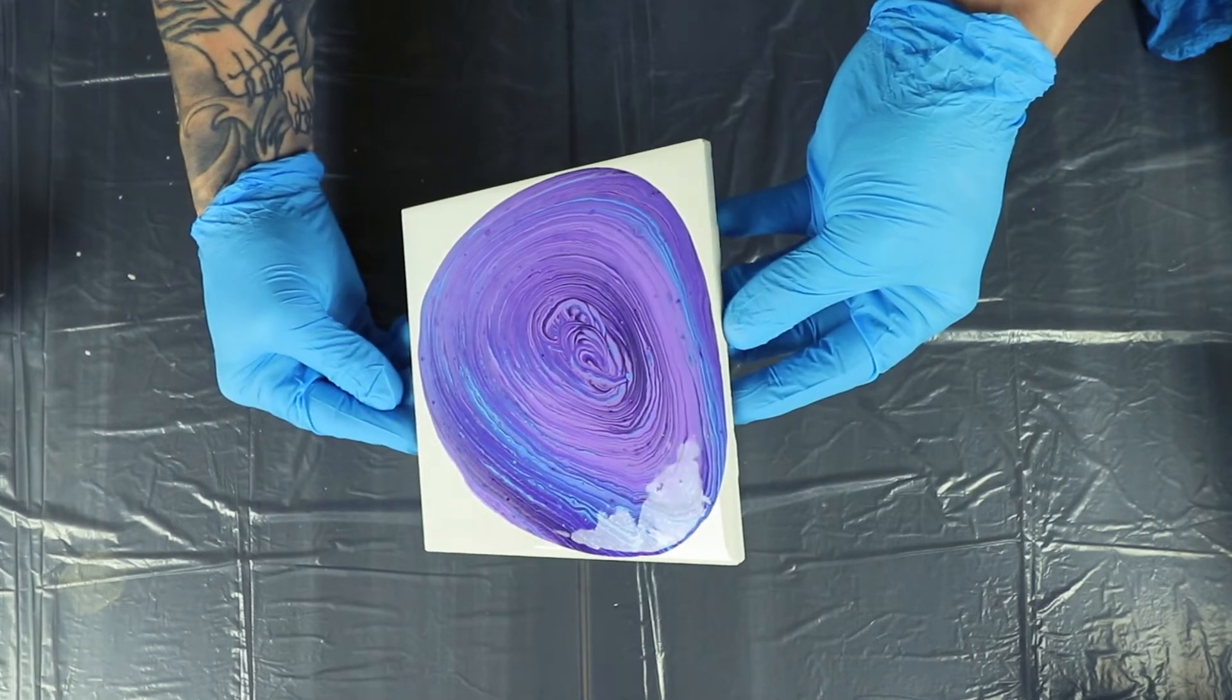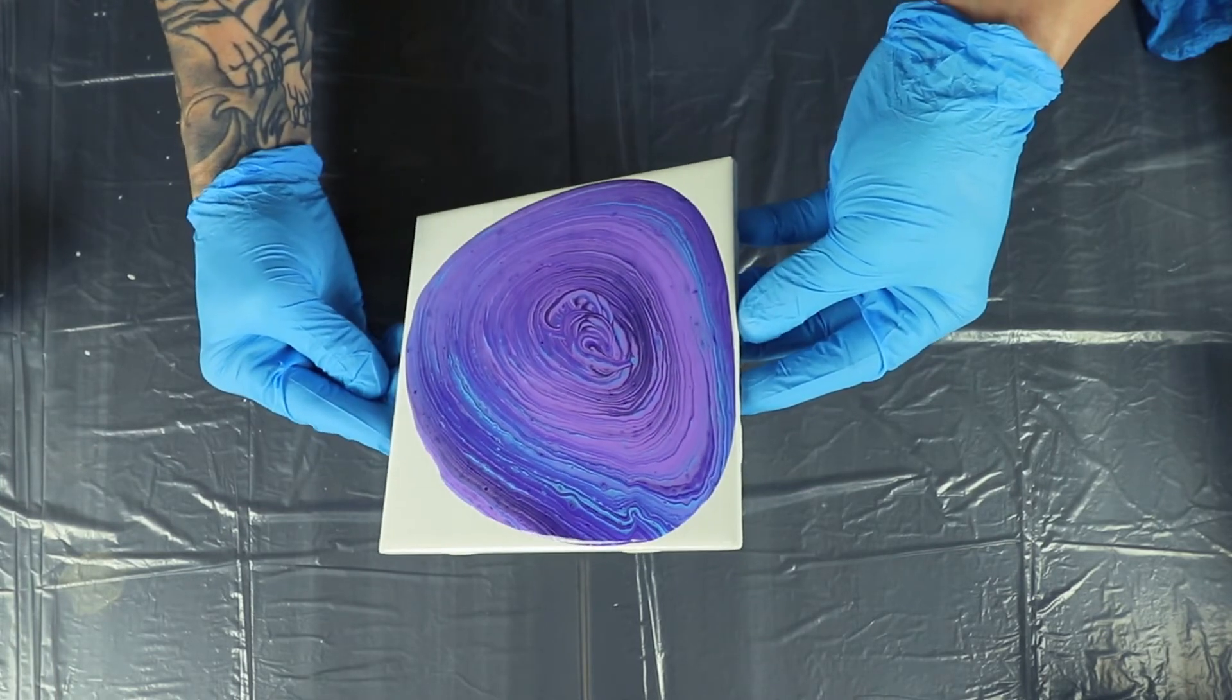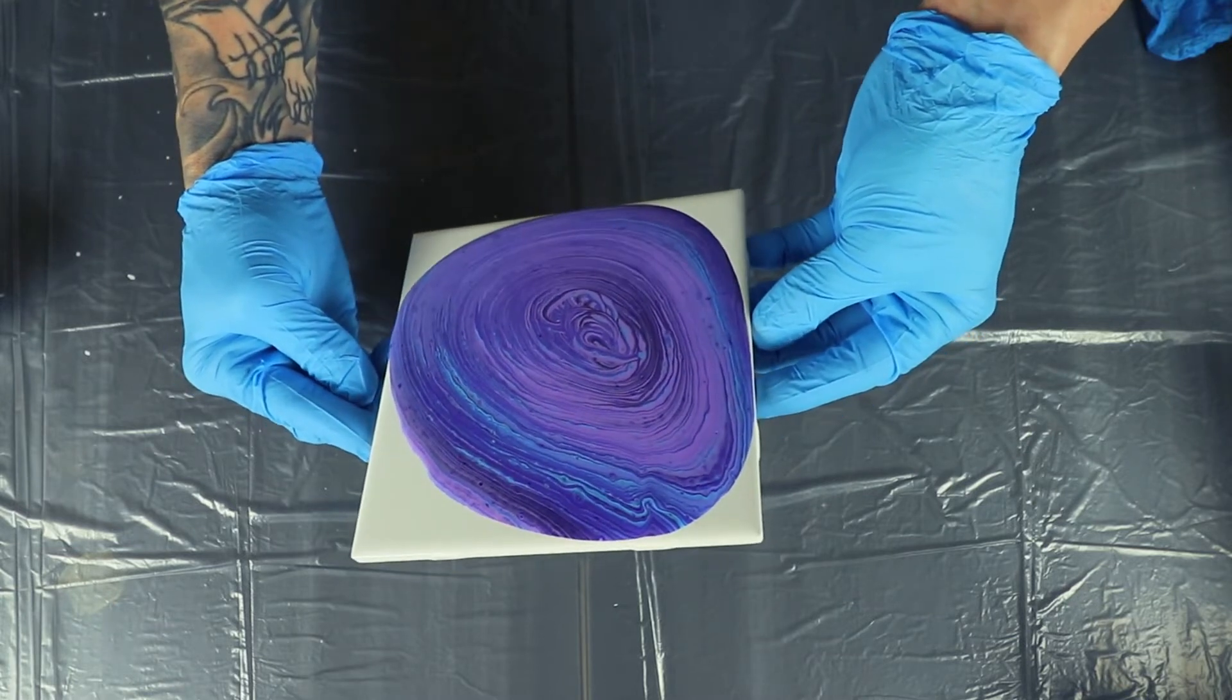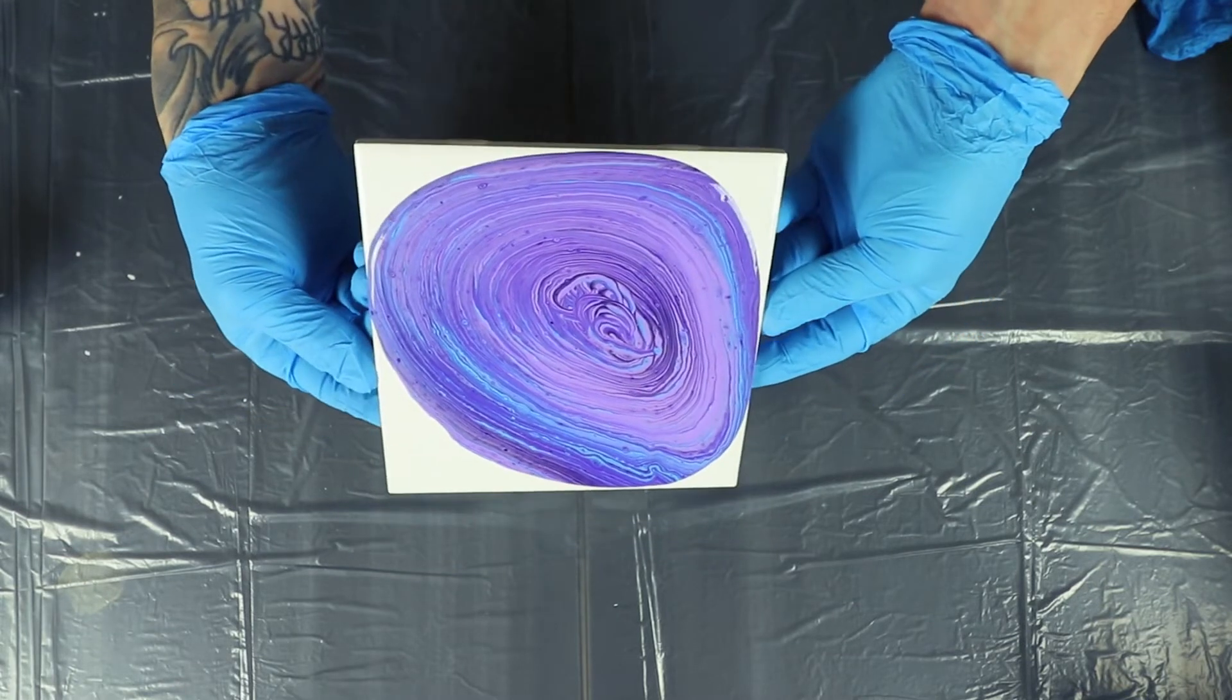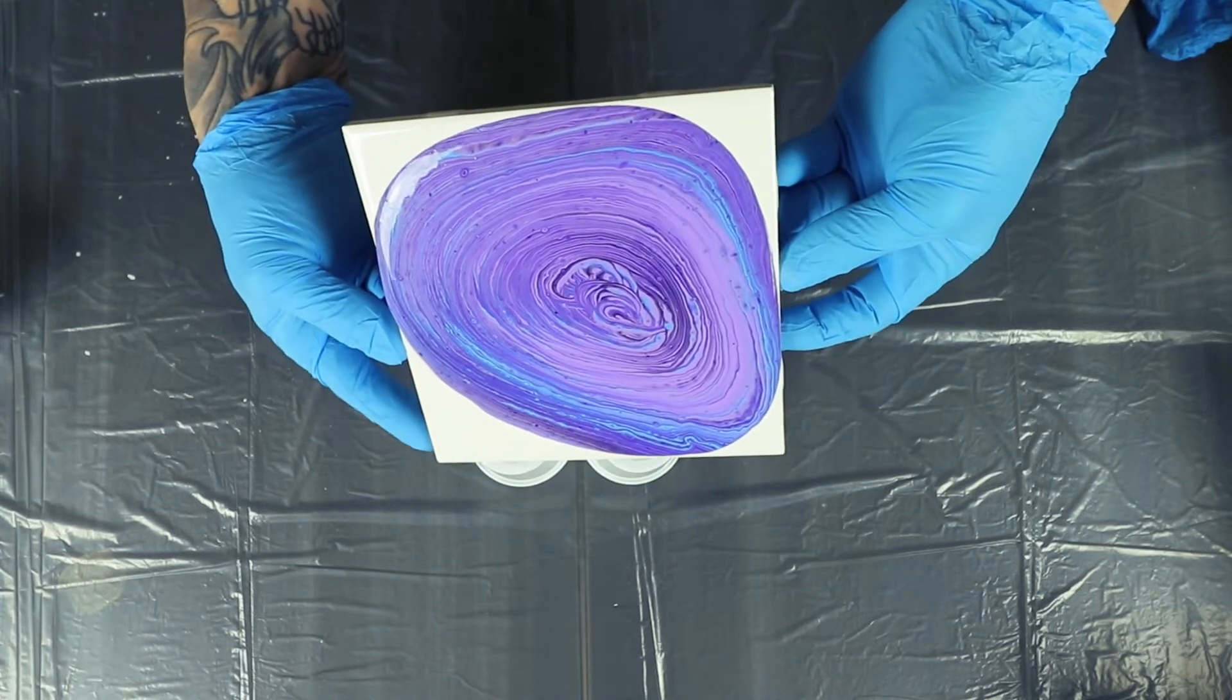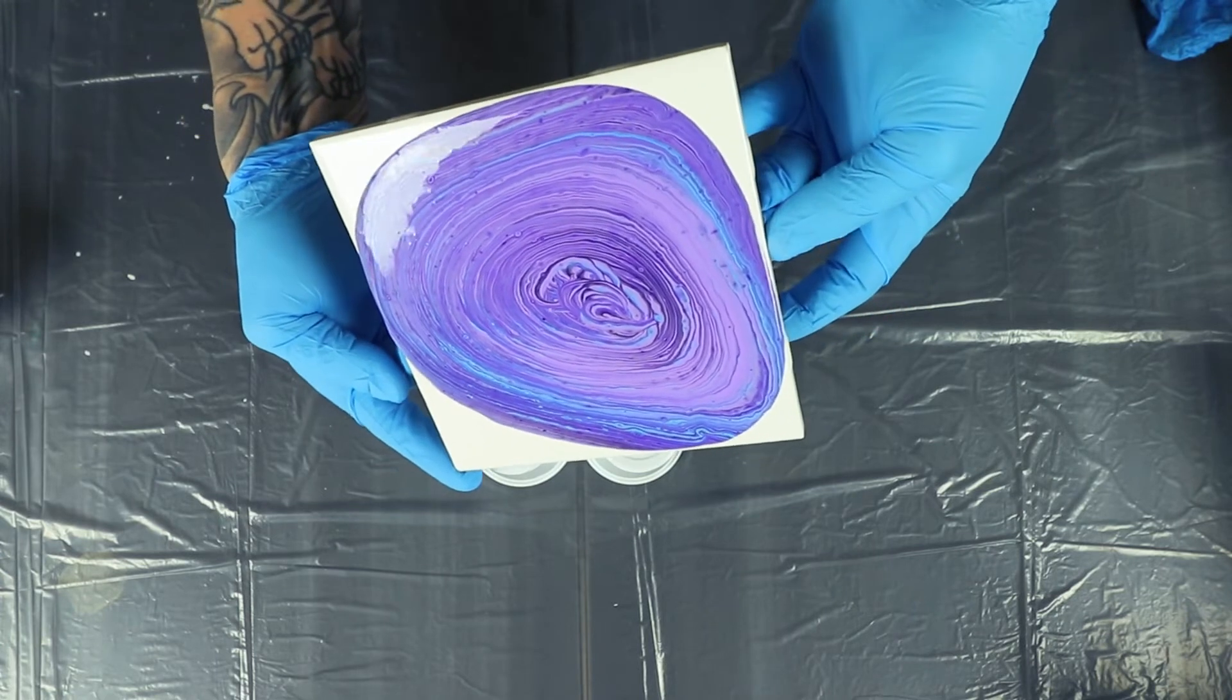As you can see, you're starting to see a little bit of the Floetrol and the cell structure coming up between. And when you stretch it, you're going to see it a lot more. It's going to definitely be a lot more pronounced. So we're just going to stretch it a little bit. It is a little bit more difficult to get it to flow just because of the lack of a base coat. And that's okay.